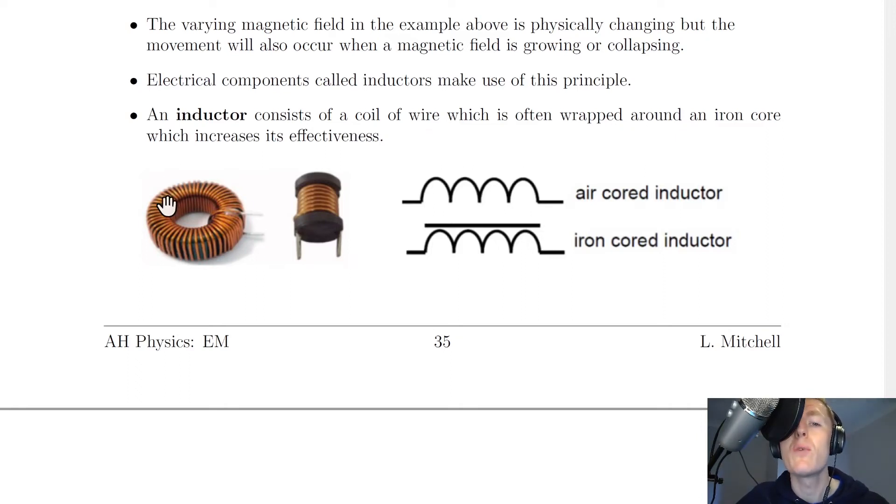So here we've got a coil of wire, and you'll notice that if it's wrapped around an iron core, we call it an iron core inductor, and this is its circuit symbol, where the semicircular parts represent the coil and the straight line represents the iron core.